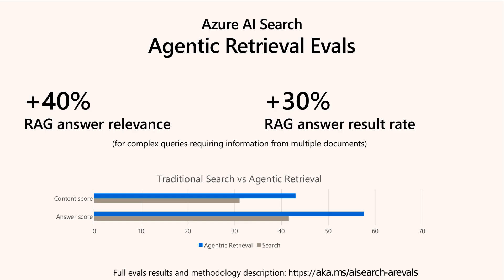Performance evaluations reveal agentic retrieval boosts answer relevance by around 40% over traditional search, especially with complex queries requiring multi-document synthesis. These gains translate into higher precision and user satisfaction, demonstrating agentic retrieval's impact in challenging scenarios. Detailed methodology and datasets are referenced in the session's blog post.